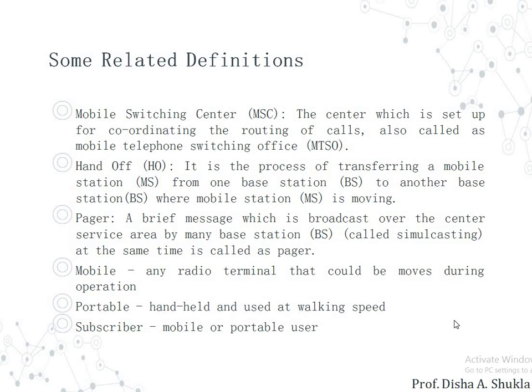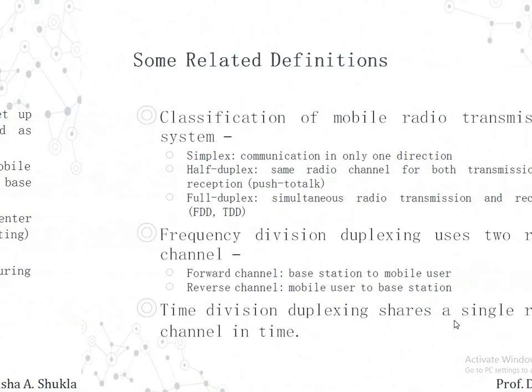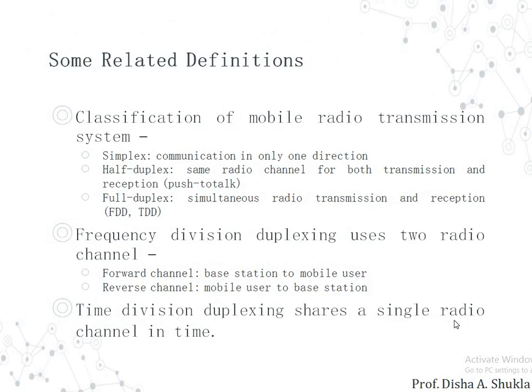A Mobile is any radio terminal that can move during operation. A Portable device is handheld and used at walking speed. A Subscriber is a mobile or portable user. The radio transmission systems are basically classified into three types: a simplex system, a half duplex system, and a full duplex system.